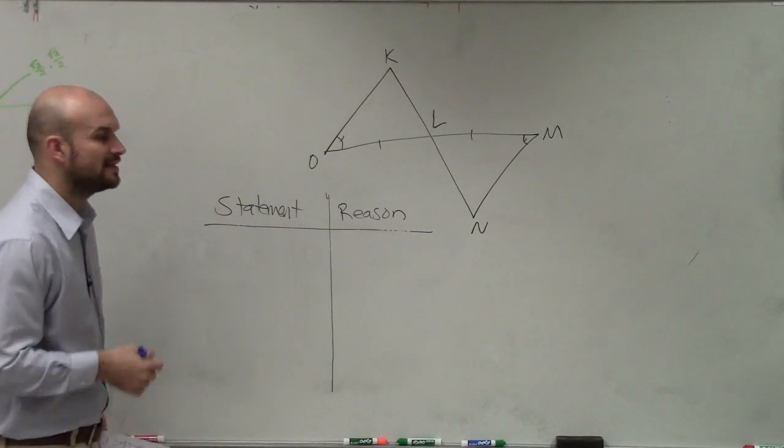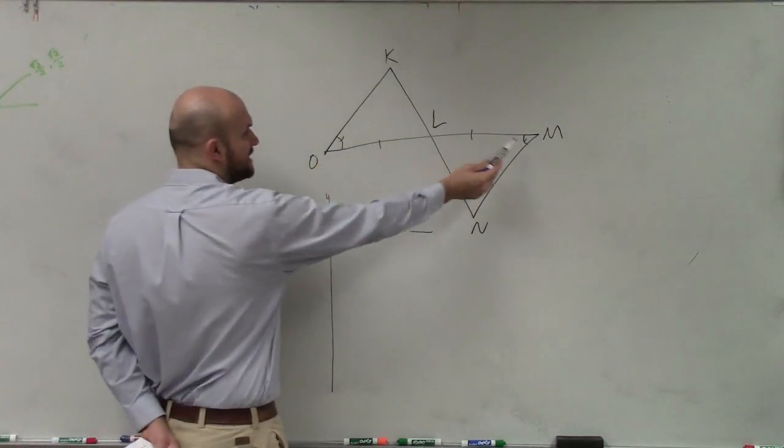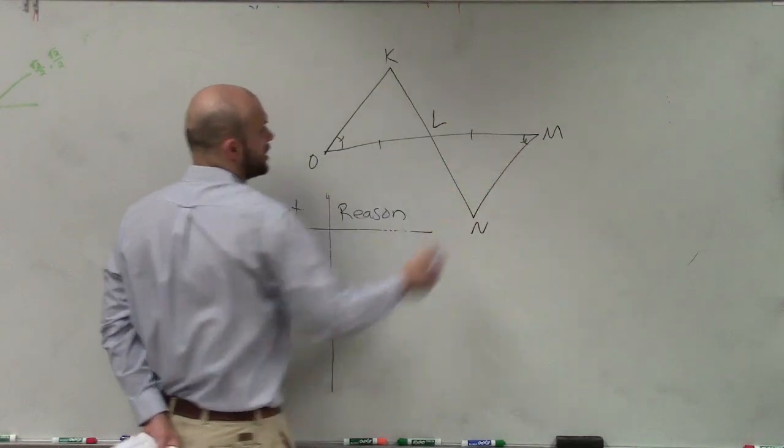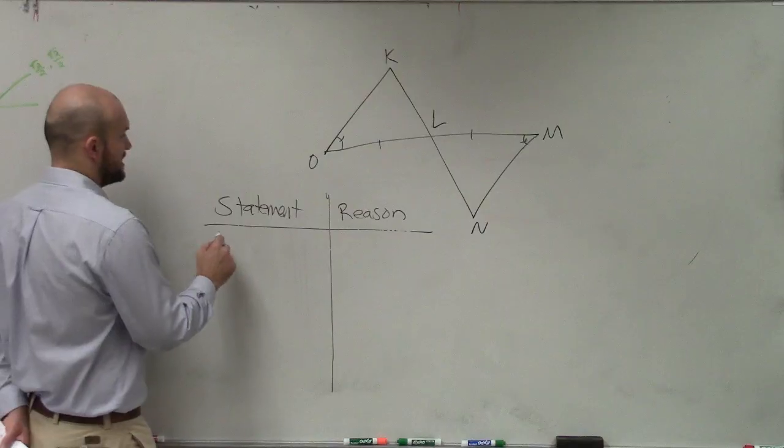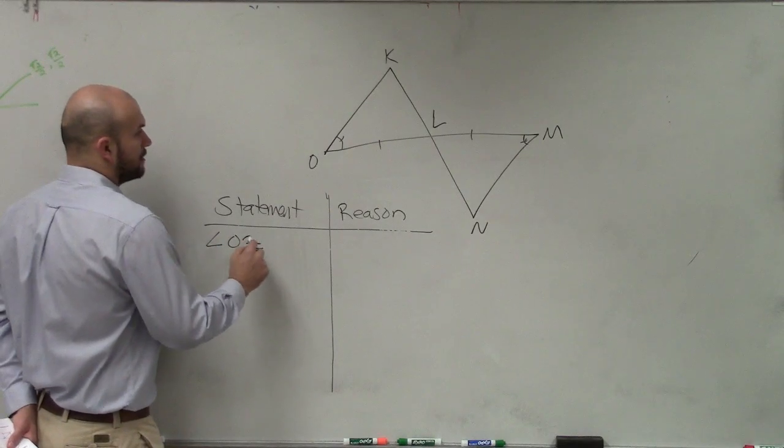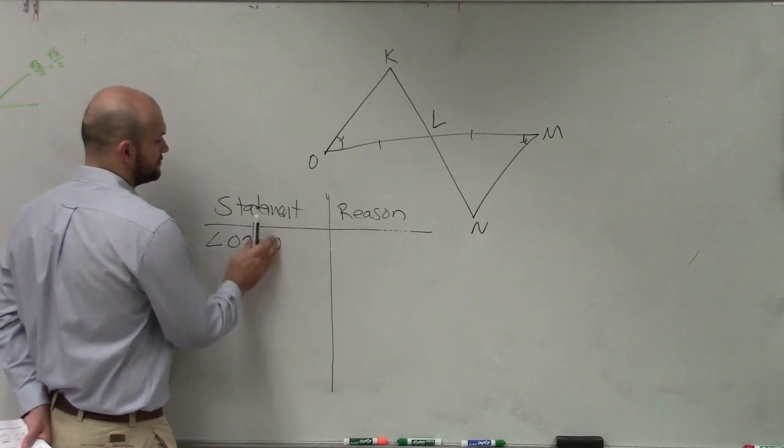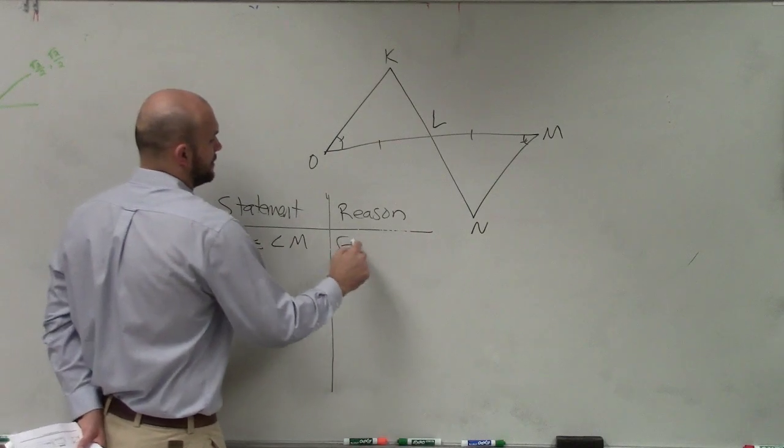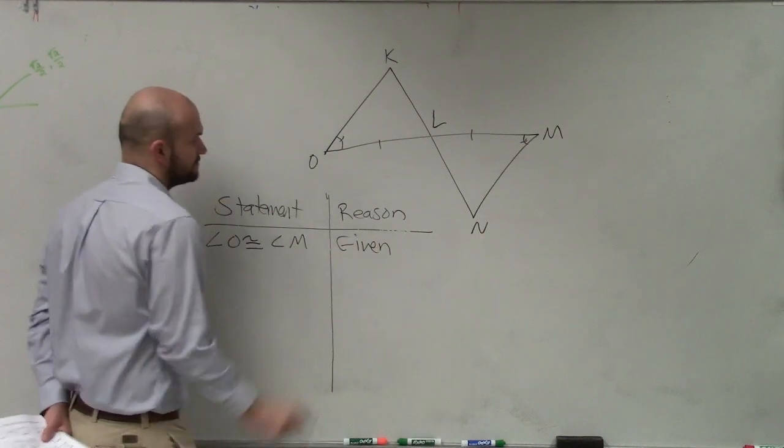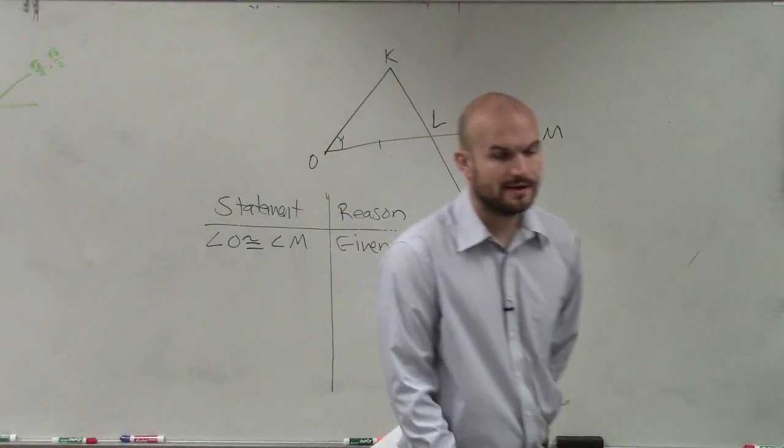So let's just look at this. We see that these angles in this picture are given to us as equal. So I can say angle O is congruent to angle M, because that is given.